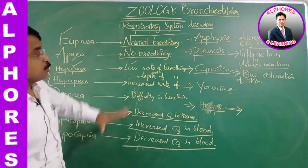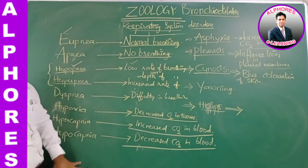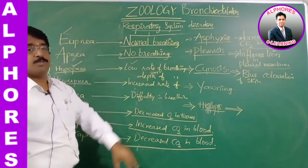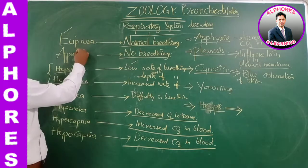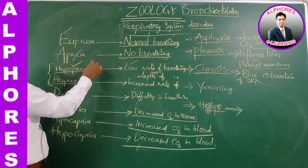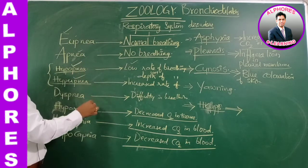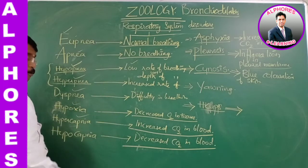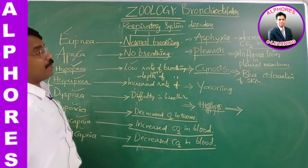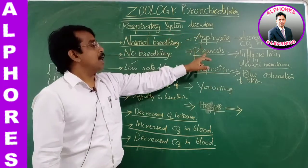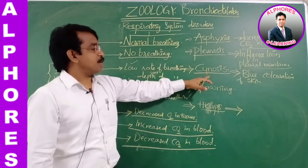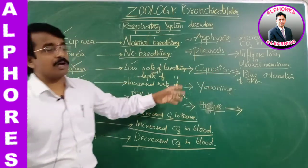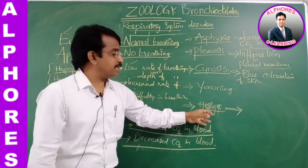So these are the terms related to respiratory problems: eupnea, apnea, hypopnea, hyperpnea, dyspnea, hypoxia, hypercopnea, hypocopnea, asphyxia, pleurosis, and cyanosis — these are the disorders. Yawning and hiccups are the additional conditions.